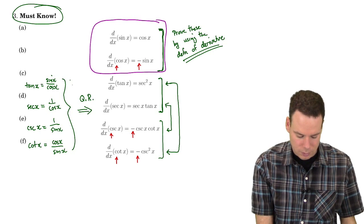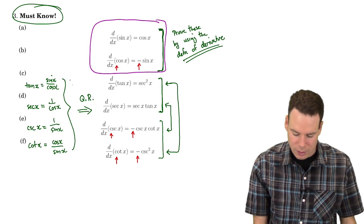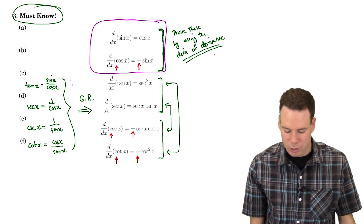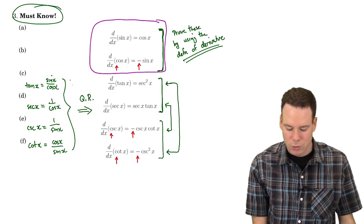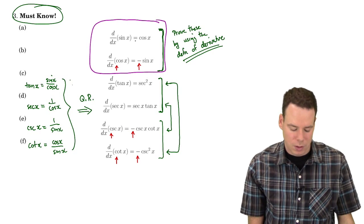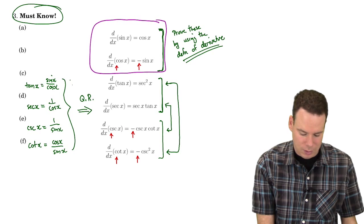So let's go ahead and start with the first thing we want to attack: proving that the derivative of sine is cosine using the definition of derivative.